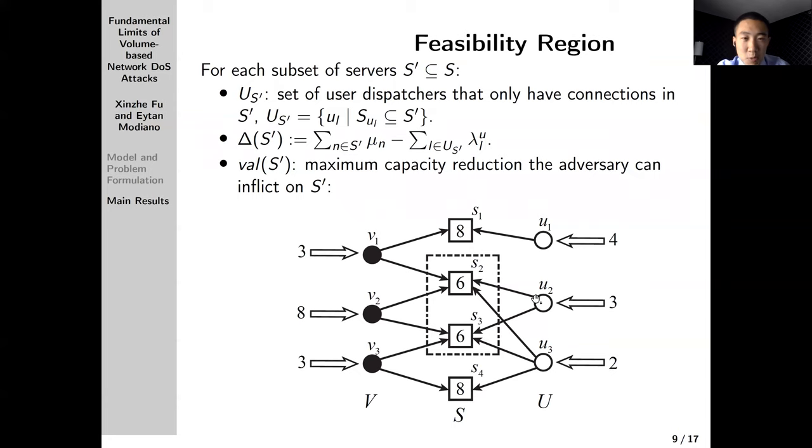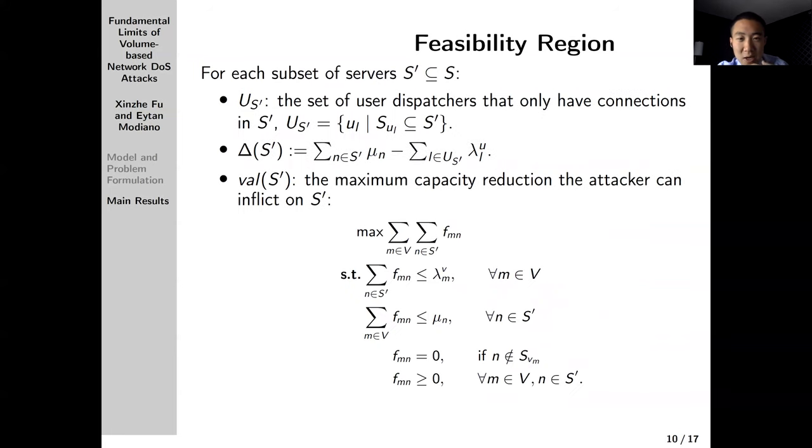Third, we use val(S') to denote the maximum capacity reduction that the adversary can inflict on S'. In this case, by the adversary, specifically V1 injecting 3 to S2, V2 having 4 here and 4 here, and V3 injecting 3 here, val(S') is actually 12 because the adversary can completely reduce the capacity of this subset to zero.